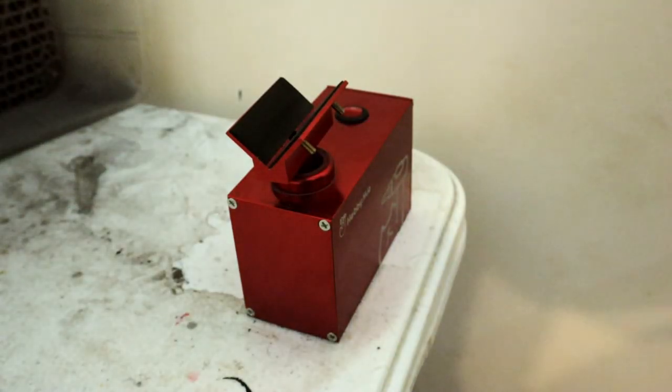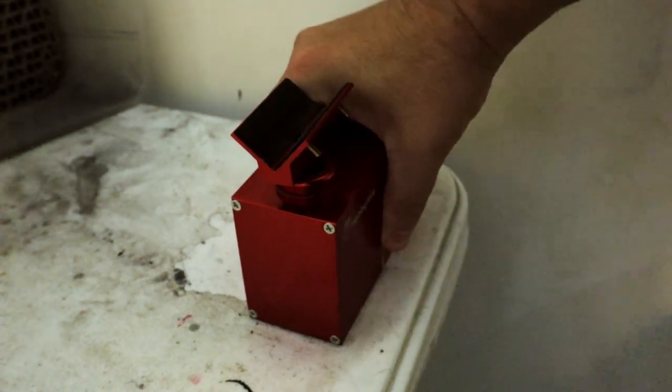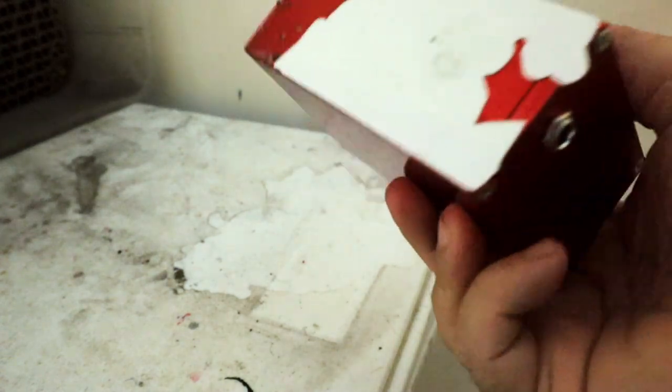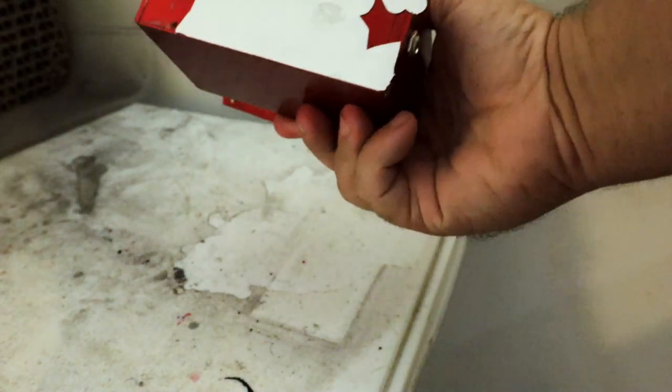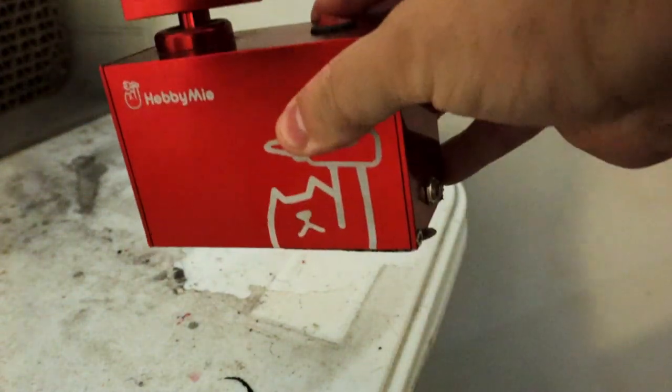So here I have my Hobby Mio paint shaker on my old desk, and I just want to show you guys how strong this thing is. That's how much force it took to come off there. I had a sticker underneath there. But yeah, even with the sticker on the desk and the 3M tape, this thing still held very strong.